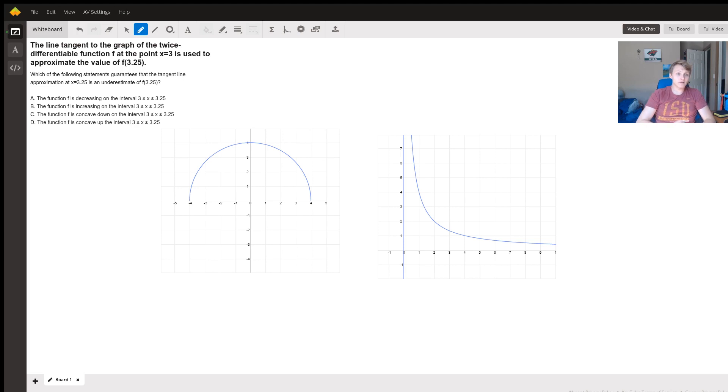And so we have four options to guarantee an underestimate using a tangent line. Does the function need to be decreasing, increasing, concave up, or concave down?